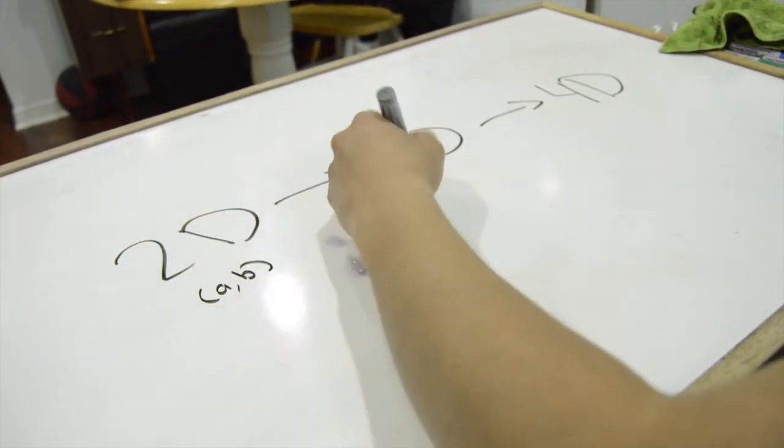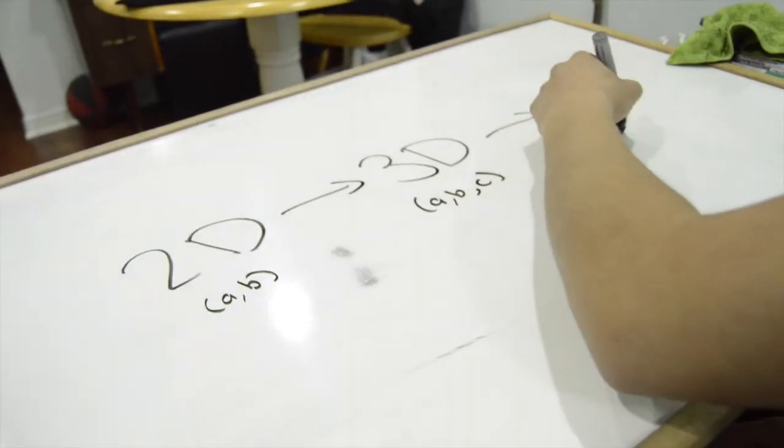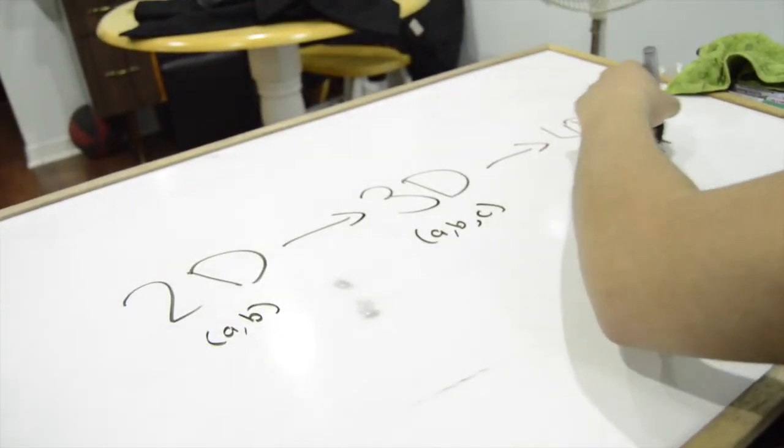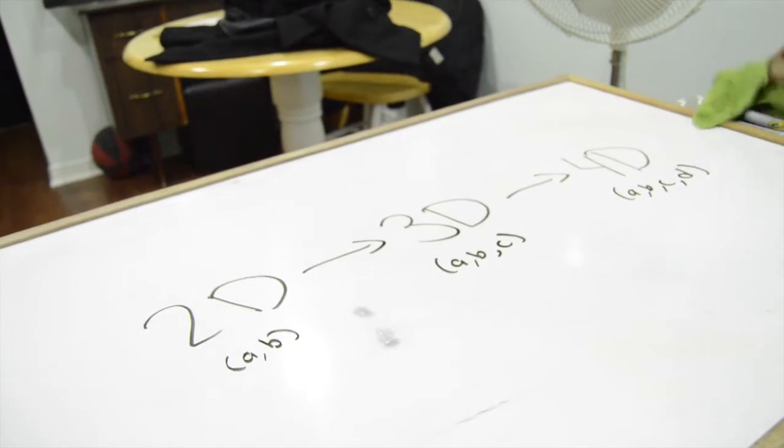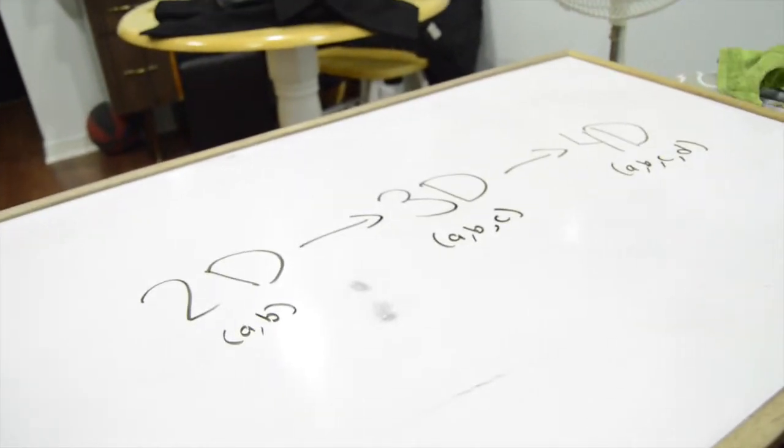2D has two coordinates, 3D has three coordinates, and 4D has four coordinates. Basically, we're just adding another coordinate to our set of equations.